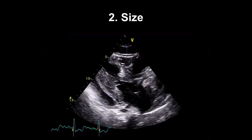We want to think about the size of the effusion. The hemodynamic effect is not directly related to size — a small, quickly accumulating effusion can be hemodynamically worse than a larger chronic one. However, once you've found a pericardial effusion you'll likely be re-scanning the patient to show whether it's getting worse or better, so measurements are useful to compare. Less than one centimetre is a small effusion, one to two centimetres is moderate, and more than two centimetres is large. In this view the effusion looks moderate.